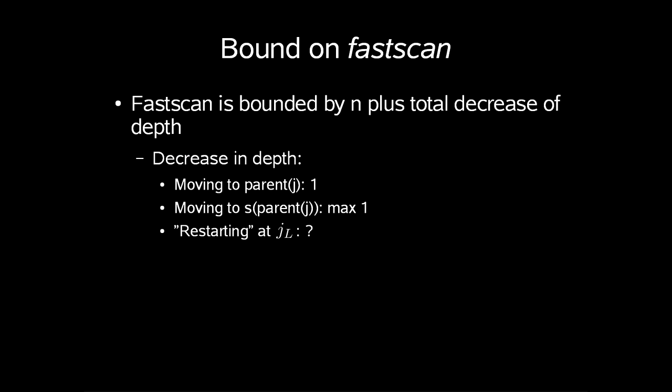So, our search is bounded by whatever fast scan takes. So, there is a bound on fast scan. It is bounded by n for the maximal node depth in the tree plus total decrease of node depth. So, how much do we decrease? Well, moving to parent j is 1. Moving to suffix link of parent of j is at max 1.